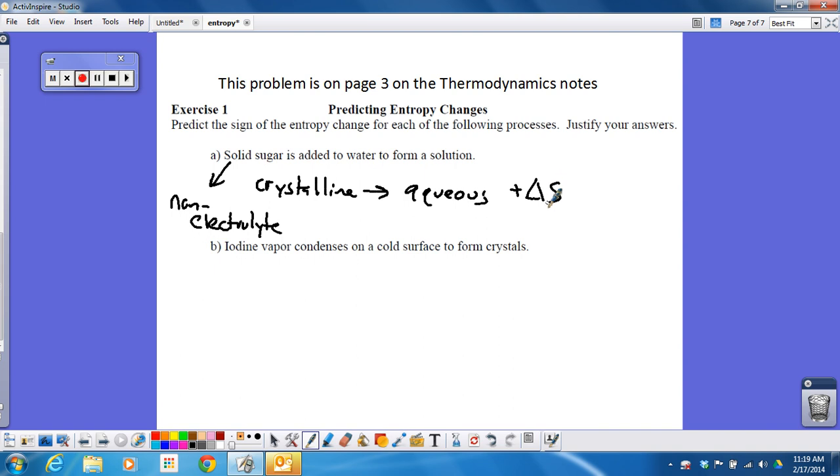If iodine vapor condenses on a cold surface to form crystals, that means I'm going from iodine gas to iodine solid. So going from something where things are spread out at random to another system where things are in a definite pattern, that would be a negative delta S.